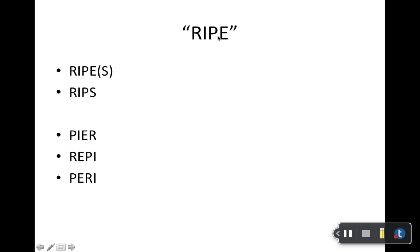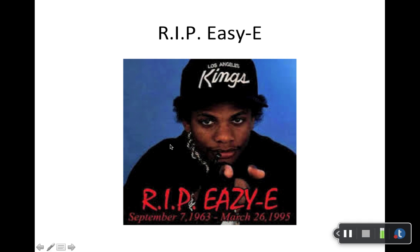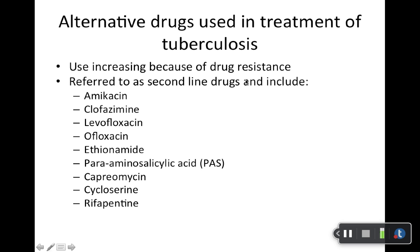A couple of mnemonics: you will see RIPE used — R for rifampin, I for isoniazid, P for pyrazinamide, E for ethambutol. Older textbooks that include streptomycin may use RIPES or RIPS. Any mnemonic that works for you is fine — PEER, REPI, PERI — whatever helps you remember those four first-line drugs.